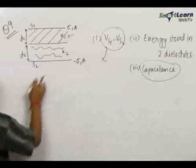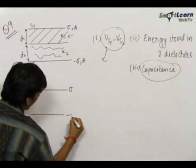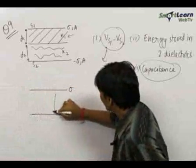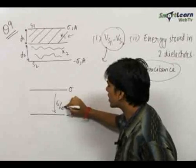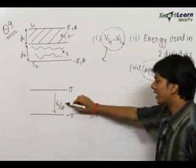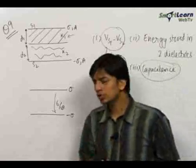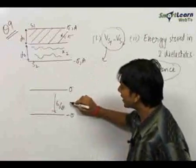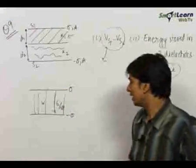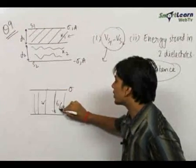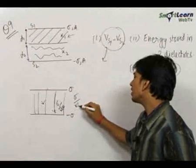Let us solve the first part by the concept of dielectrics. The electric field if there was no dielectric was equal to sigma upon epsilon zero, and the direction of electric field is from positive charge to negative charge. When a dielectric of dielectric constant k is introduced throughout this area, the electric field will be reduced by a factor of k. So the electric field will become sigma upon k epsilon zero.